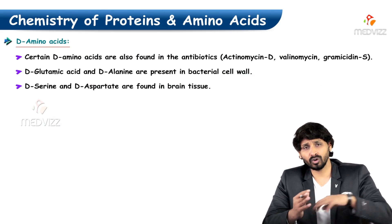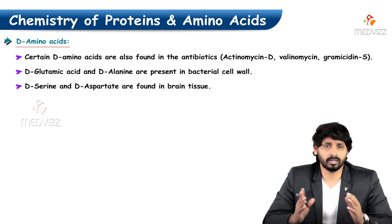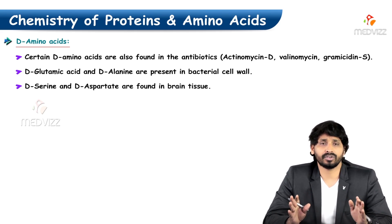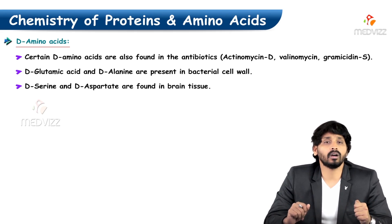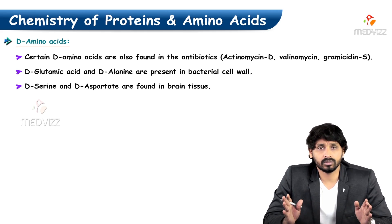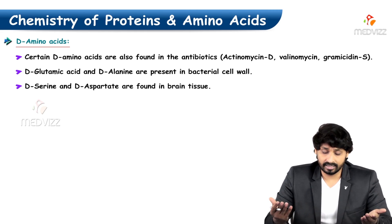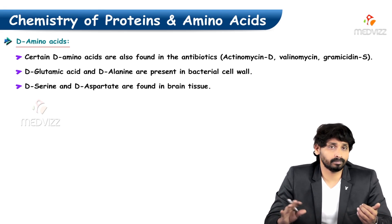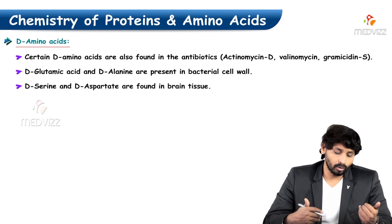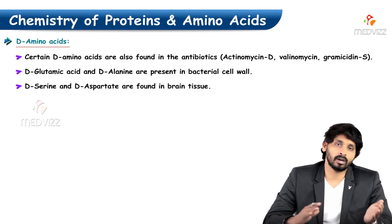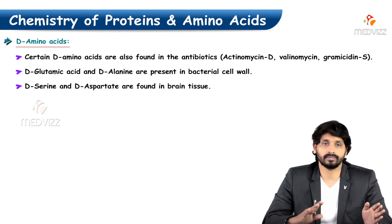D-amino acids: in biological systems, our body can utilize only L-type amino acids. D-amino acids do exist but are not utilized in the same way. Certain D-amino acids are used commercially in treatment of diseases — for example, antibiotics such as actinomycin D, valinomycin, and gramicidin are prominent antibiotics in treatment of bacterial infections. D-glutamic acid and D-alanine are present in bacterial cell walls. D-serine and D-aspartate are also found in brain tissue.